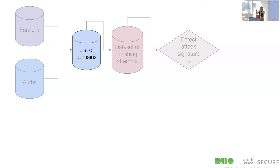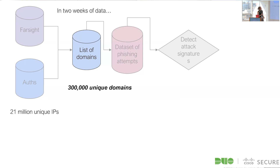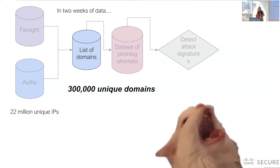The goal is: take authentications, apply DNS enrichment data from Farsight, generate a list of domain-IP pairs, and create a dataset of true-positive labeled phishing attacks. From there we can extract attack signatures and train a classifier. But labels are a significant problem. In just two weeks of data we had 21 million unique IPs, which amounted to 300,000 unique domains — and almost none were actually phishing domains. A lot were benign proxies, tools to subvert government censorship, personal websites. We needed to sift through all of these.